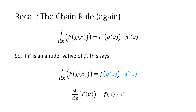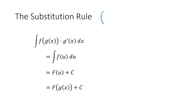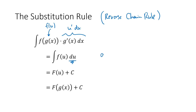Looking at the chain rule again, if we think of the outside function as capital F — an antiderivative of little f — then the integral rule tells us that if we have f of u times u prime, we can think of that as related to the chain rule. This is exactly what the substitution rule says: the substitution rule is the reverse of the chain rule. If you have f of u multiplied by u prime dx — which is also what we call du, since du equals u prime times dx — then the antiderivative gives capital F of u, and substituting back gives capital F of g of x plus c.